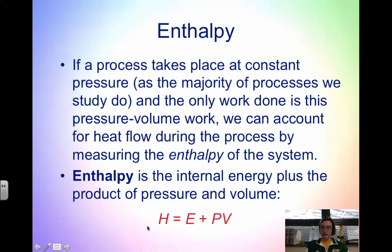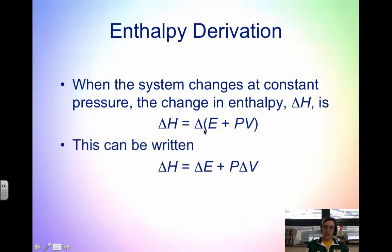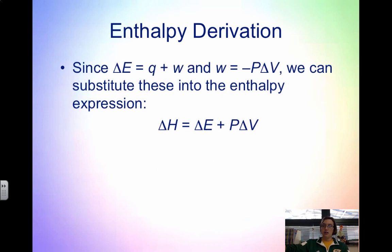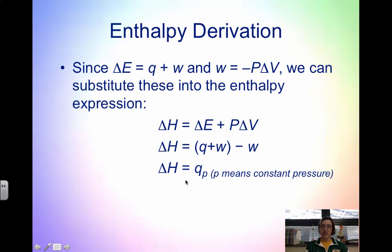Enthalpy takes into account internal energy, pressure, and volume. Since E is a state function, as well as pressure and volume, H is also a state function. When the system changes at constant pressure, the change in enthalpy — delta H — equals delta E plus P·delta V, because pressure is constant. Since delta E equals Q plus W, and W equals negative P·delta V, substituting into the enthalpy expression and simplifying gives us delta H equals Q at constant pressure.